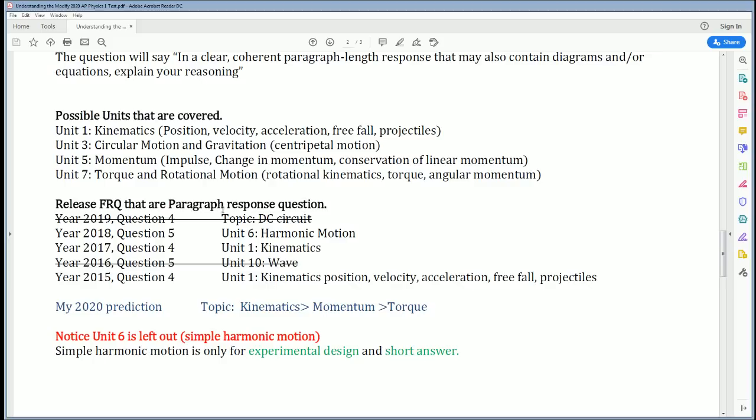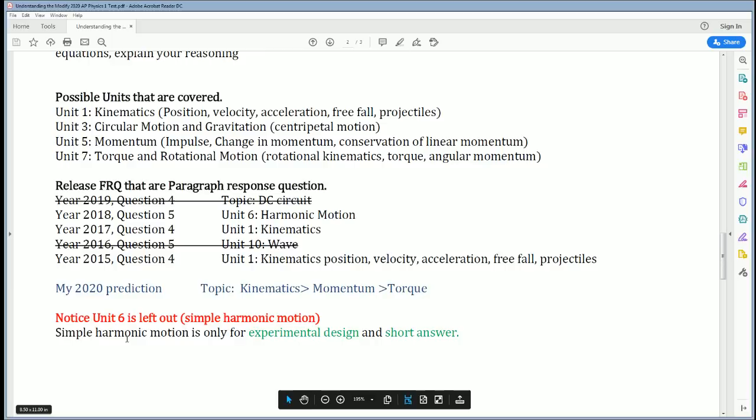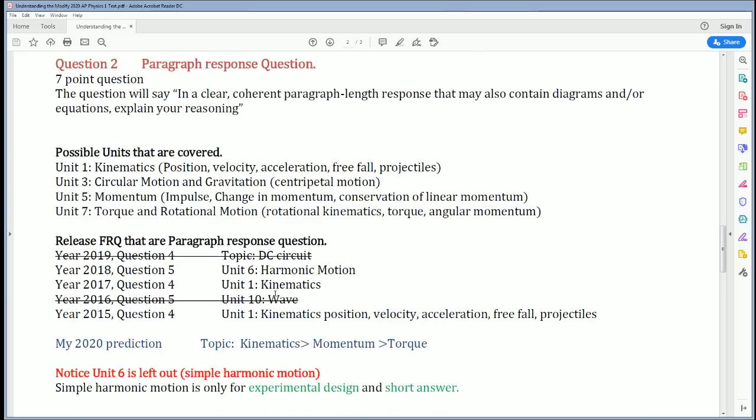The fact that circuits and waves are removed means the only thing left is circular motion, torque, momentum, and kinematics. My prediction is that it's actually going to be kinematics. Kinematics is very straightforward and easy to graph and explain. Second, I think it's momentum. If they want to be brutal, it would be torque. Notice, Unit 6, simple harmonic motion, is left out here because it can only be on experimental design or short answer questions. It was weird that in 2018, Question 2 was actually a simple harmonic motion question, so there is a possibility. But most likely, I think it's going to be kinematics. If you want to study for the paragraph part, look at kinematics first, then momentum, then torque.